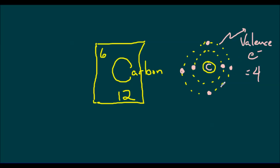Interestingly, carbon would like to have a total of 8 in this outer shell. If it had a total of 8, it would behave like neon. Neon, being a noble gas, doesn't react — it's in a stable condition. So carbon wants to get a total of 4 more electrons in this outer shell somehow or other. Let's see how carbon tends to do that.